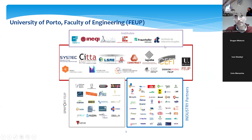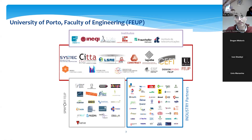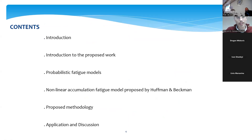Here we have the research centers, and based on the activity generated between the academy, research centers, and institutes of interface, we have a lot of spin-offs generated by our research activities in partnership with industrial partners. We also have different kinds of industrial partners that are supporting our activity.